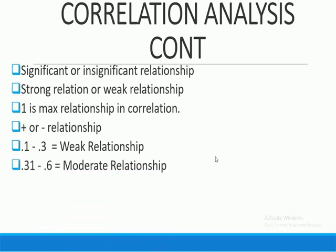If the correlation of variables A and B falls between 0.31 and 0.6, then it is considered a moderate relationship. If the relationship is 0.61 or above, then it is considered a strong relationship.